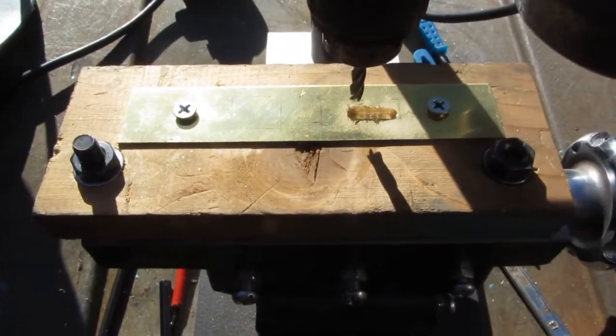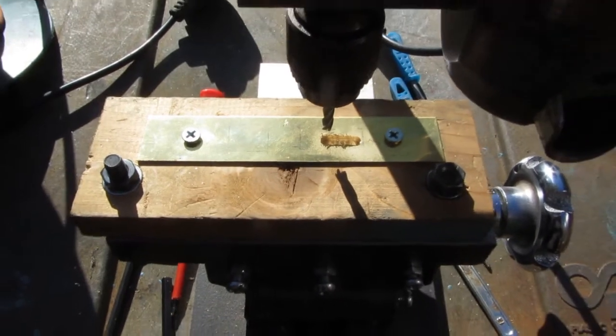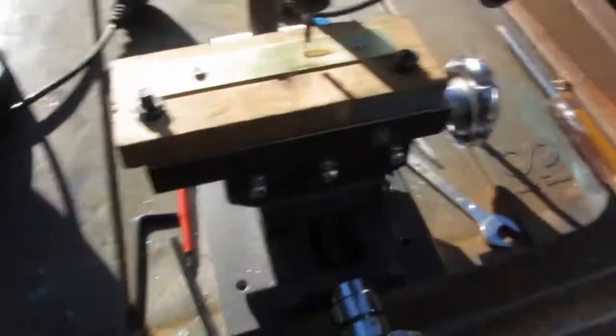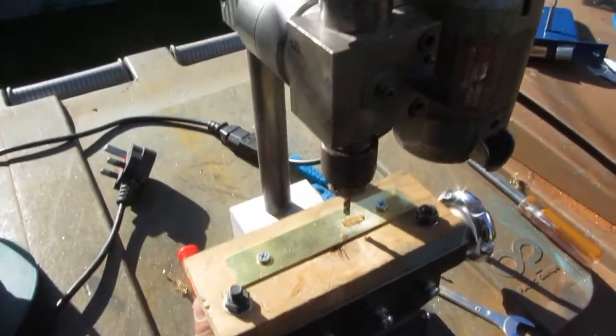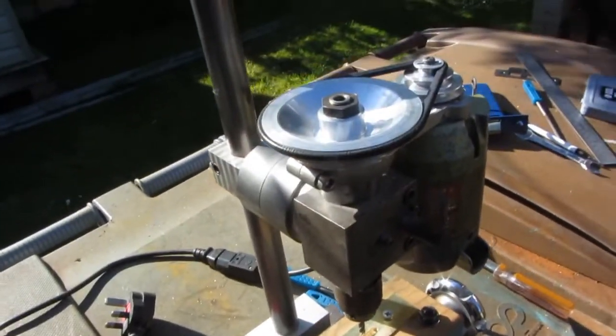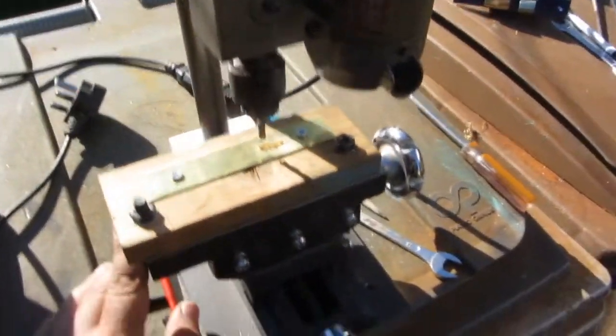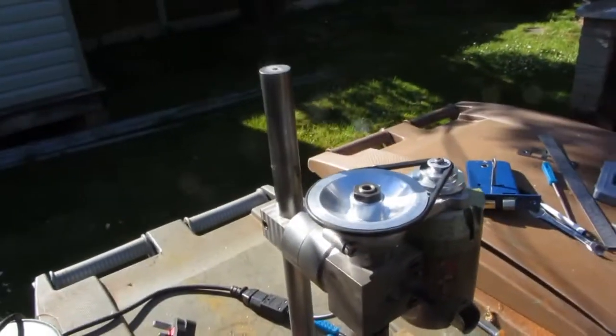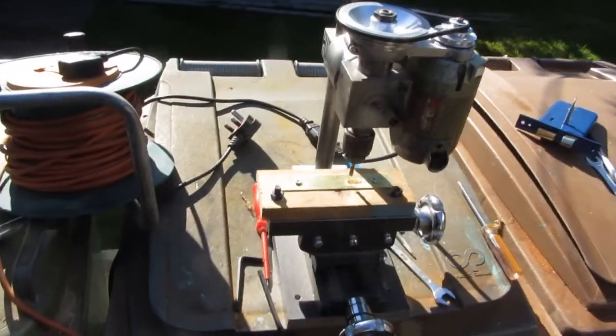I've got the Emco FB2 mill which is in the house but that's set up for a different job at the moment and I can't disturb it so at a time like this I need another mill and the Unimat 3 is a pain to set up so this is perfect just a standalone mill just for these odd jobs.